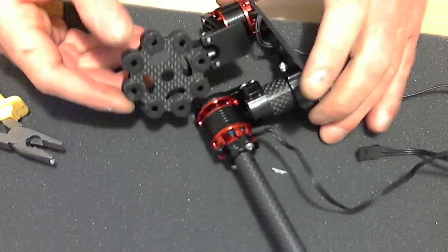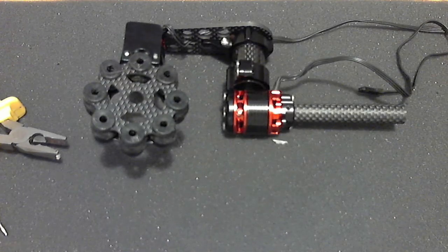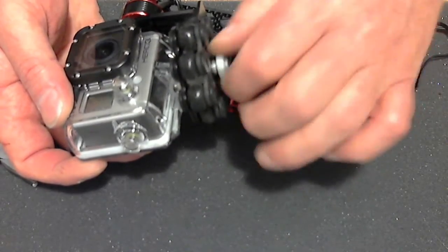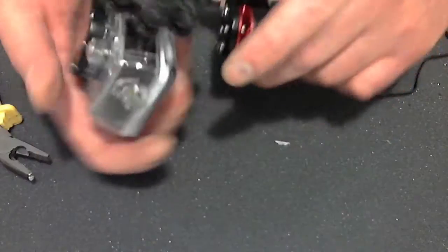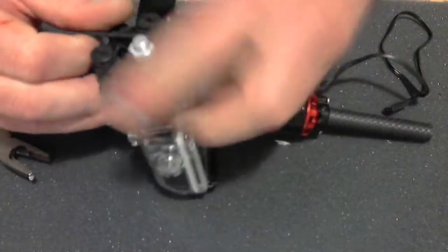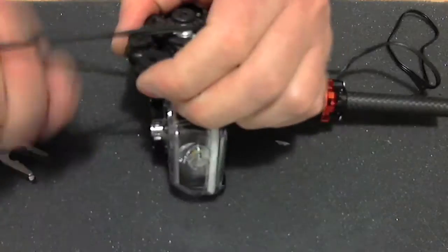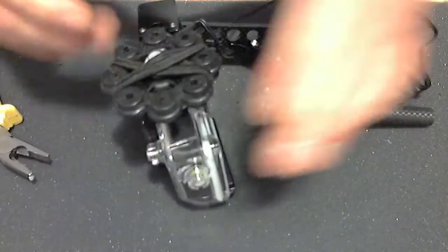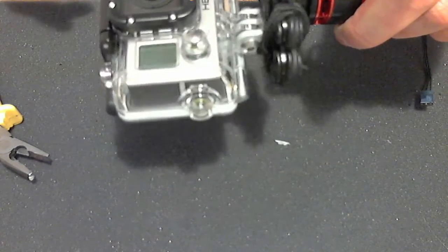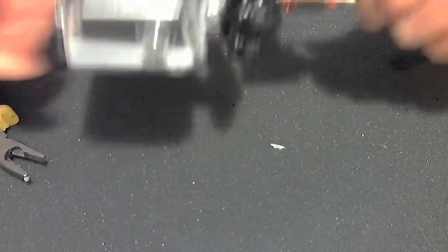So there we have it, that is actually the gimbal built. Now the GoPro will bolt on there. At the moment you can see it isn't even close to balance. You do need to compress the balls on the 8-ball using the band supplied. If you didn't get these bands, these are just girls' hair elastics you can buy from any supermarket. That is now the gimbal assembled. At the moment you can see that isn't balanced.